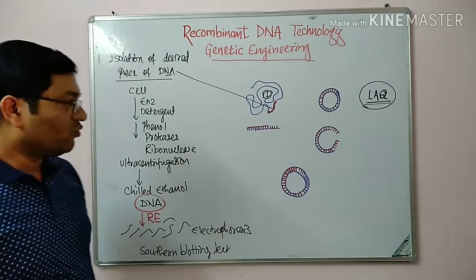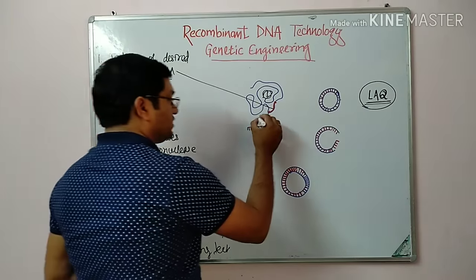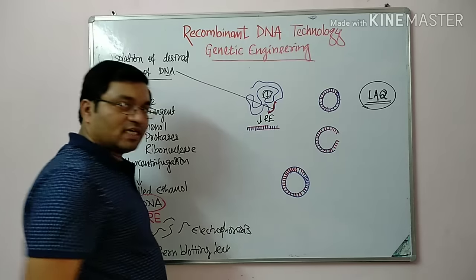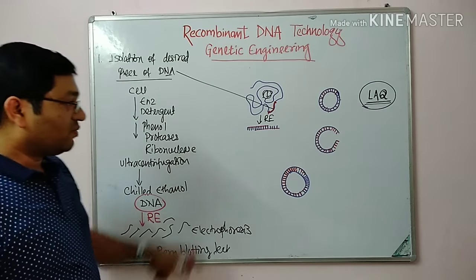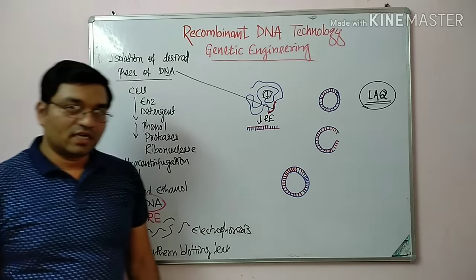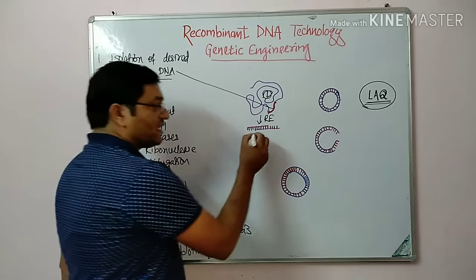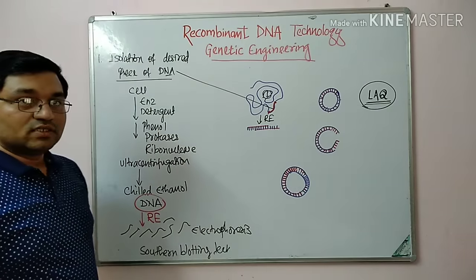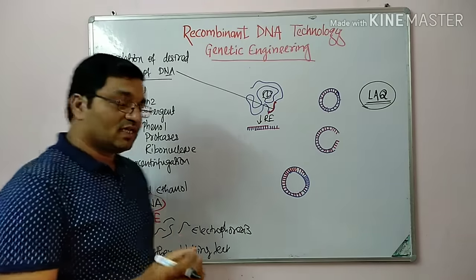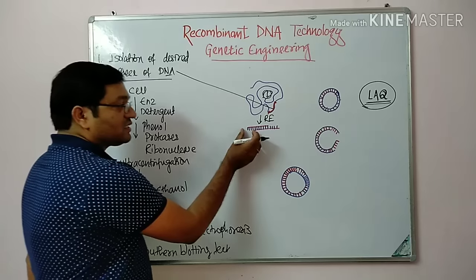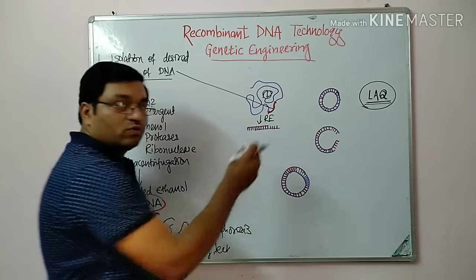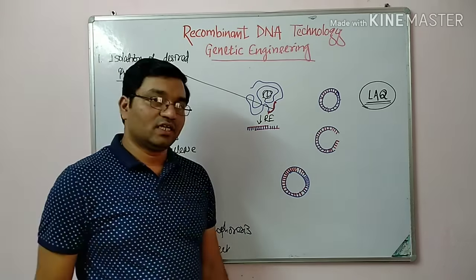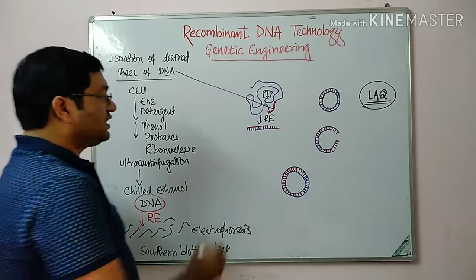The DNA molecule is treated with restriction endonuclease, which is a DNA-cutting enzyme. After treatment with restriction endonuclease, you will get a desired piece of DNA with a sticky end. A sticky end means it is a single-stranded DNA molecule which can attach to another single-stranded DNA molecule.